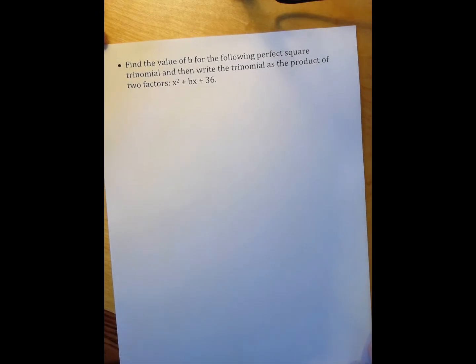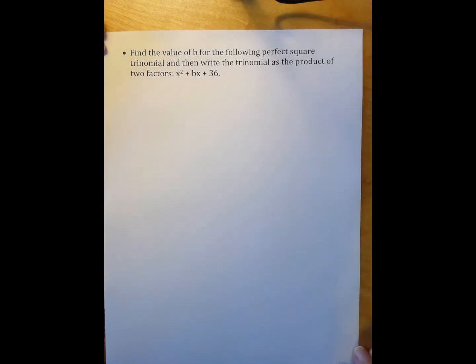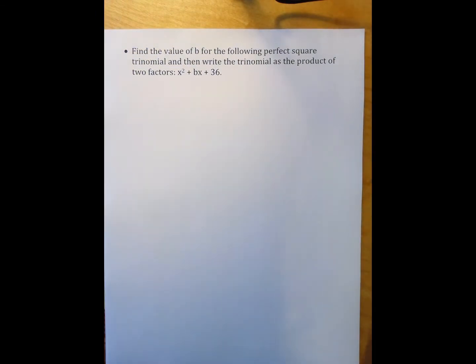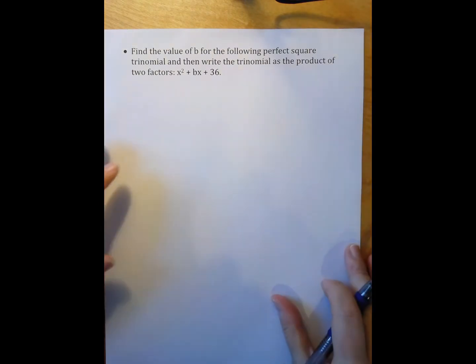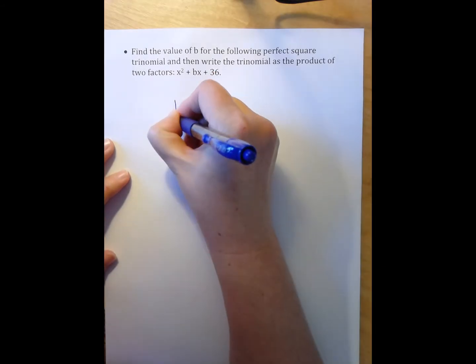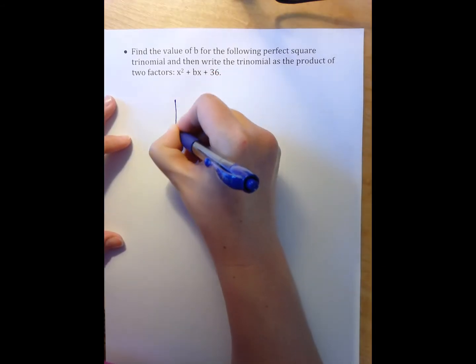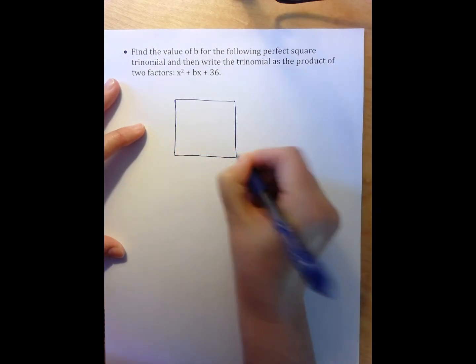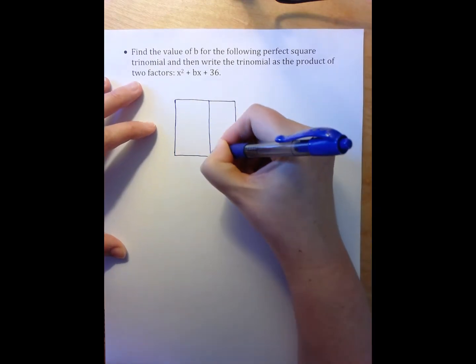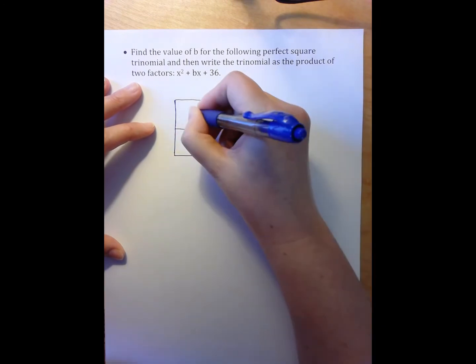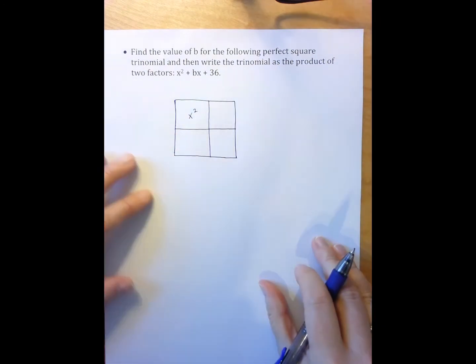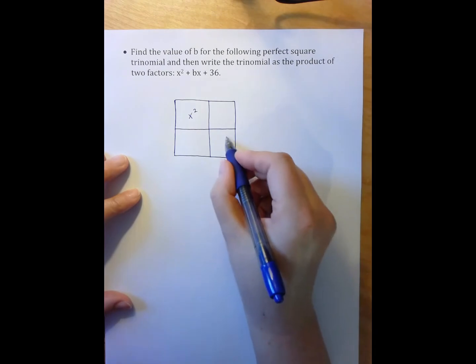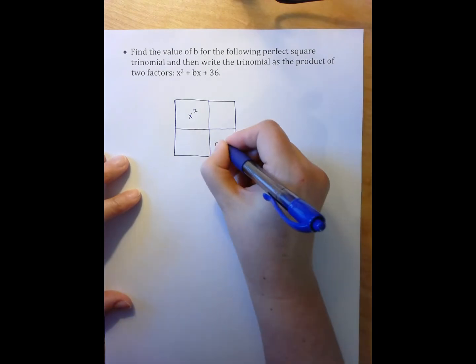The third example we're going to do actually in this case has us kind of work the other way, which is that they give us our C value and we have to find our B value. So again, two different ways of doing this. The first, I'm going to draw in a large square and then I'm going to break this up a little bit here. I'm going to have my x squared tile there. And in this case they give me my C tile, so that's over here, C equals 36.